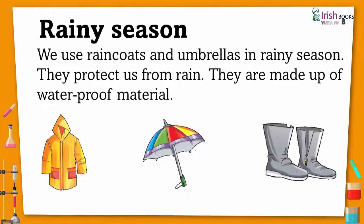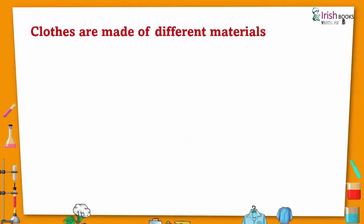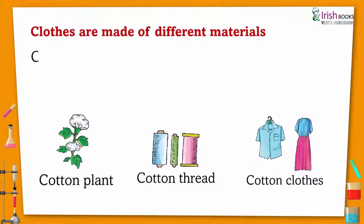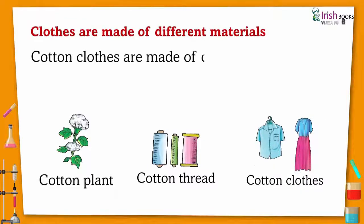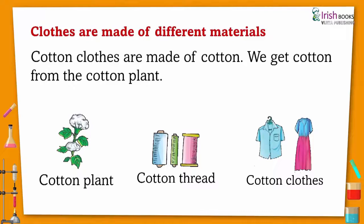Clothes are made up of different materials. Cotton clothes are made up of cotton. We get cotton from the cotton plant. Cotton plant → Cotton thread → Cotton clothes.